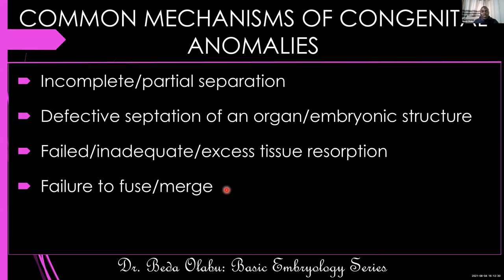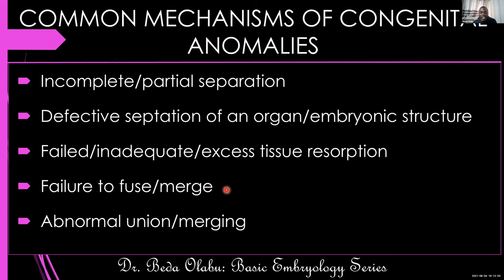Some organs, as they develop, merge — the right and left one come together. If embryonic structures fail to merge, you may get some malformation. A good example is the development of the palate — one side comes and another comes, and the two meet together to form the palate. If that doesn't happen, you'll have a cleft — that's why you call it cleft palate. You may also have cleft lip or facial cleft. There are also situations where organs which are not supposed to unite actually unite, like horseshoe kidney — abnormal fusion.